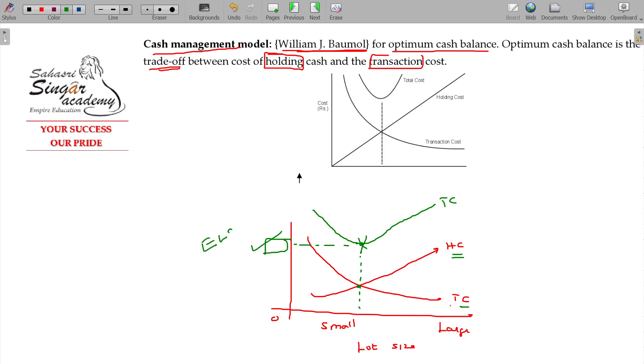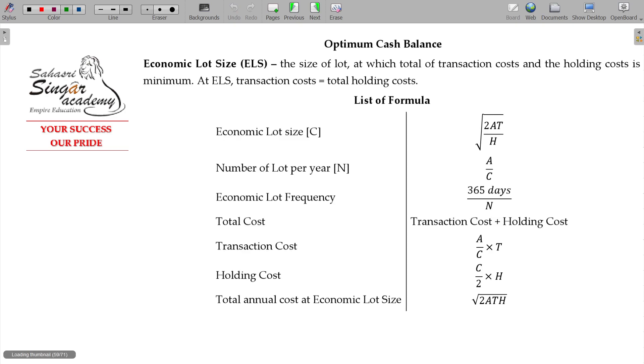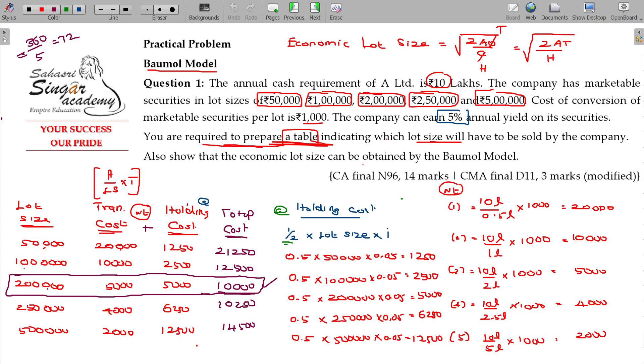The economic lot size - transaction cost also 5,000, holding cost also 5,000. These two are matching, one gradually increases. The point in time where these two are intersecting, the total cost is the cheapest one.